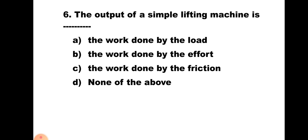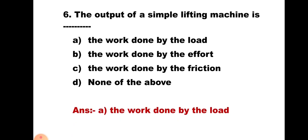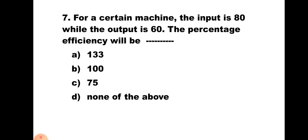Question number 6: The output of a simple lifting machine is — A) work done by load, B) work done by effort, C) work done by friction, D) none of the above. When effort moves down, the load is lifted up, so some work is done by the load, and the work done by the load is the output. Hence the correct option is A) work done by the load.